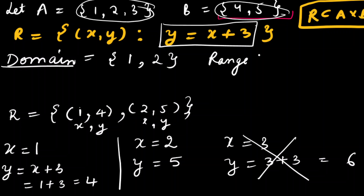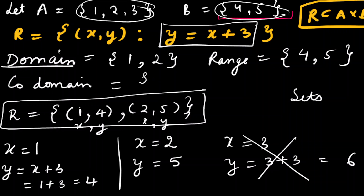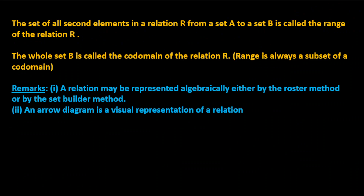Range is the values of y, so the range is {4, 5}. Domain and range are always sets. The third concept is co-domain — co-domain is always set B. Here co-domain is {4, 5}. Sometimes range and co-domain can be the same, but you must remember that range is always a subset of co-domain. The whole set B is the co-domain.